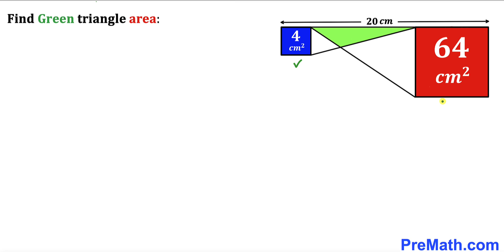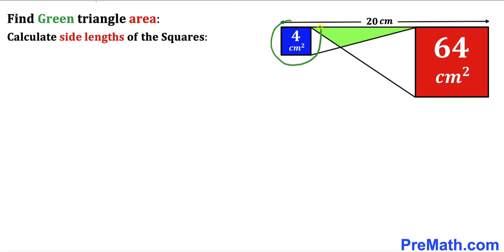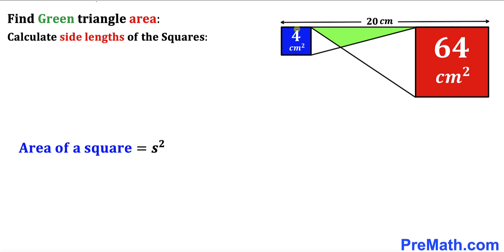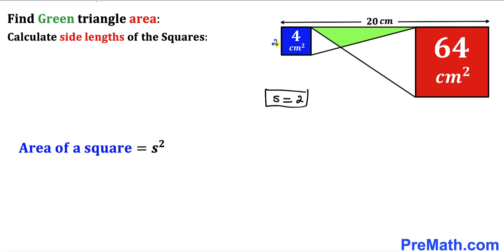Let's focus on these two squares and calculate their side lengths. For the blue square, recall the area formula: Area = s². Since the area is 4 cm², taking the square root gives us s = 2 cm. So the side length of the blue square is 2 cm.